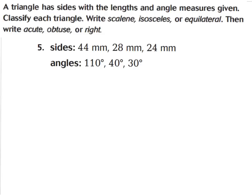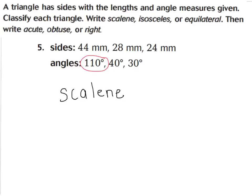Let's take a look at question number five. It says a triangle has sides with the lengths and angles measured given — classify each triangle as scalene, isosceles, or equilateral, then acute, obtuse, or right. Press pause now. Because it has three different sides, you should say it's a scalene triangle. And because one angle is 110 degrees, that right away tells me it has to be an obtuse triangle. So this would be a scalene obtuse, also known as an obtuse scalene.